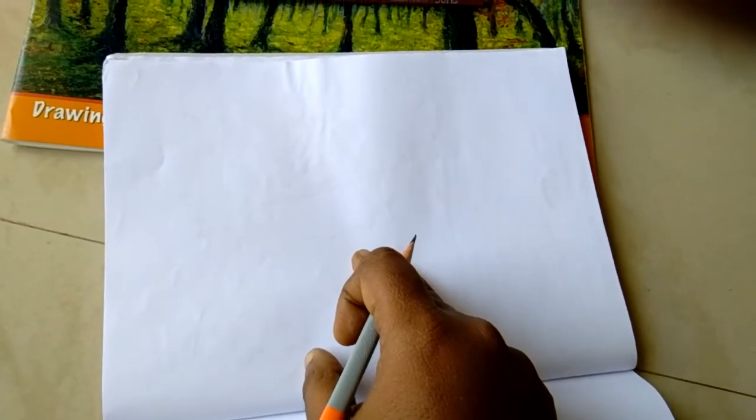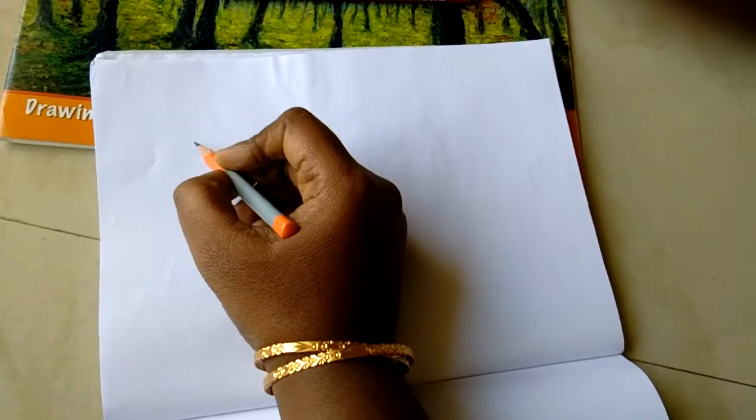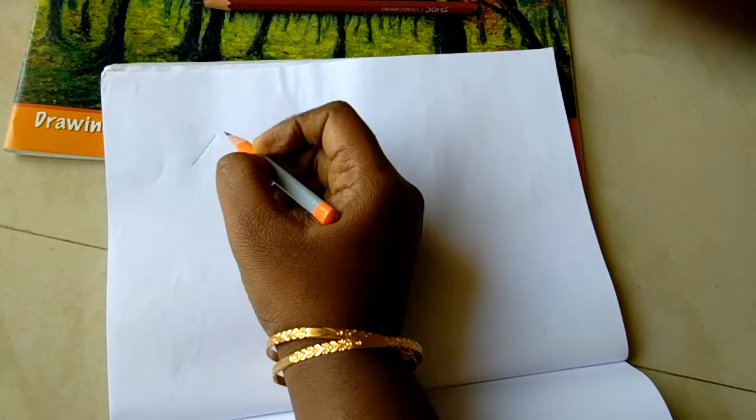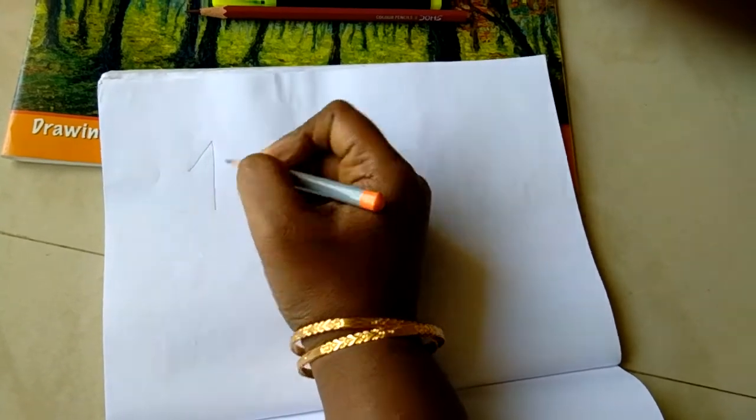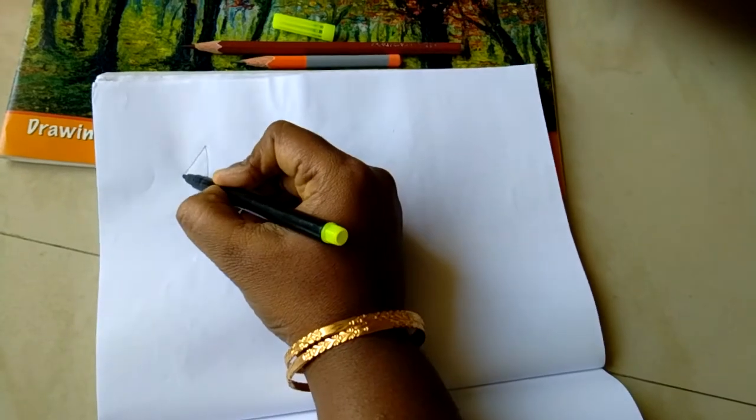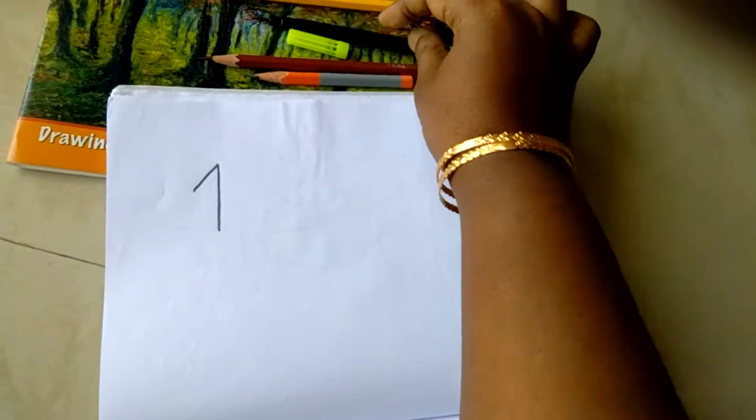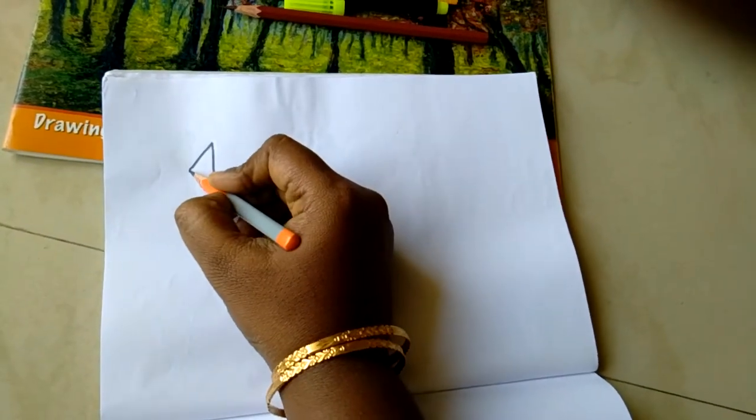Even little kids can learn it very easily, so we'll start it now. First draw number one. For reference I'm making this so you can get how it is done using number one. I'm first drawing a sword.